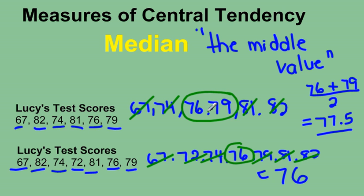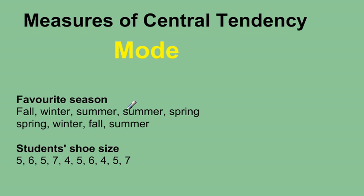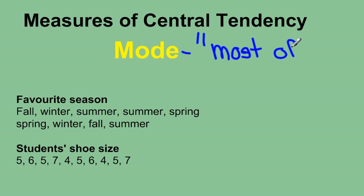So when you have two values in the middle, you must take the average of them. When you have one value in the middle, that's just your median. The last measure we're going to look at is mode, and this is the number that occurs most often. It doesn't always have to be a number — sometimes we have categorical data, so it'll be a type or a word.